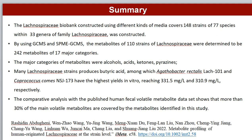By gas chromatography, mass spectrometry, and solid-phase microextraction, 110 strains of Lachnospiraceae produced 242 metabolites of 17 major categories. The major categories of metabolites were alcohols, acids, ketones, and pyrazines. Many Lachnospiraceae strains produced butyric acid. Comparative analysis with the published human fecal volatile metabolite dataset shows that more than 30% of the main volatile metabolites are covered by the metabolites identified in this study.